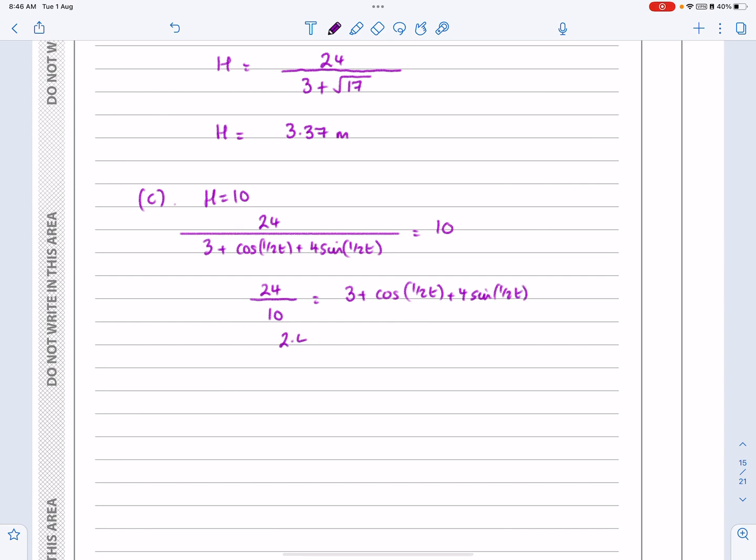I'm going to say 24 over 10 is equal to 3 plus cos, and then this business, half T plus 4 sine, half T. So, if 2.4 is equal to 3 plus that business, I'm nearly at the stage where I'll do the substitution over. If I take the 3 over, I'm going to get minus 0.6 is equal to cos a half T plus 4 sine a half T. And now, at this stage, I'm going to do the bit that I did previously.